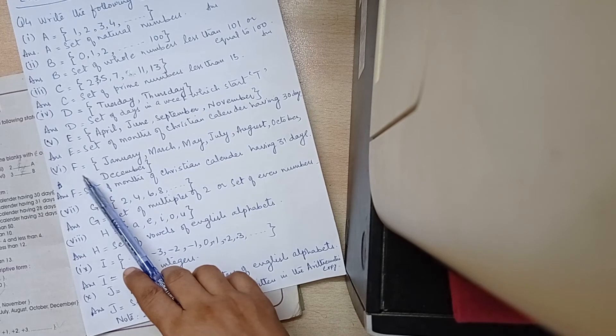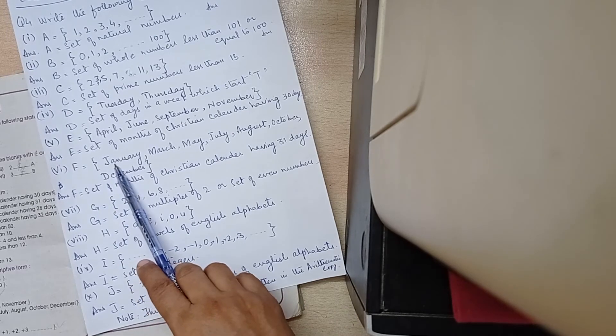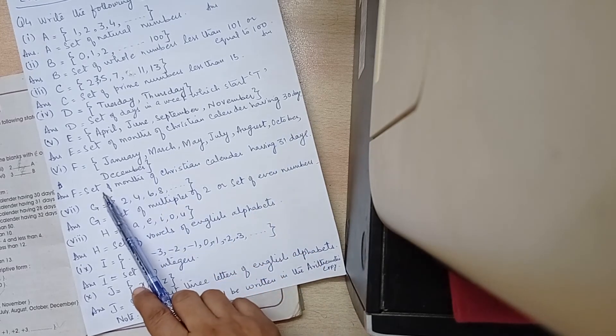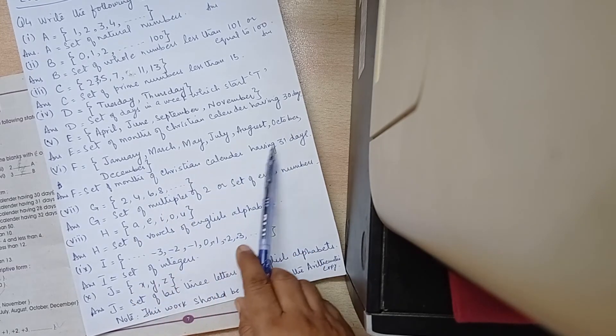F is equal to January, March, May, July, August, October, December. Set of months of Christian calendar having 31 days.